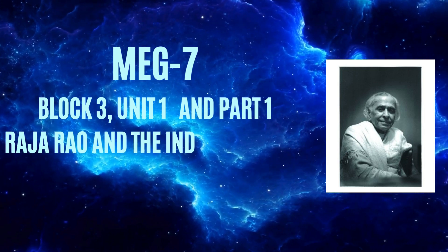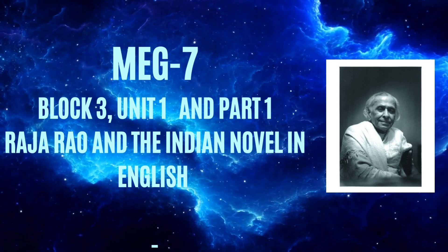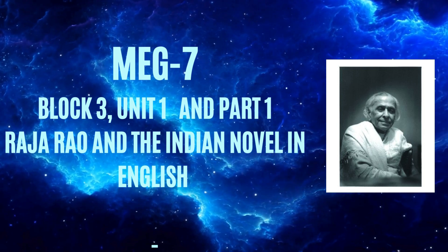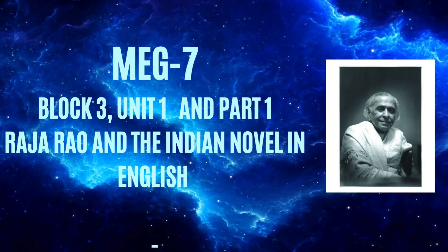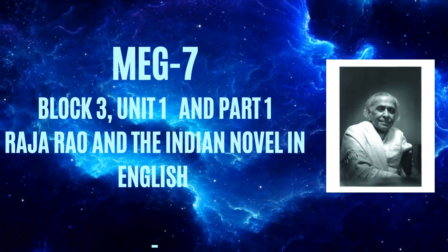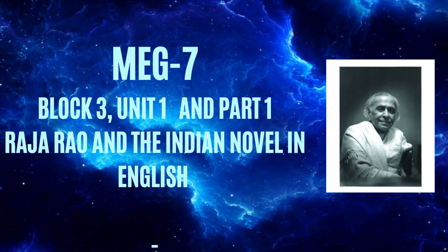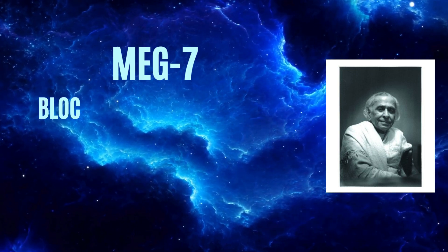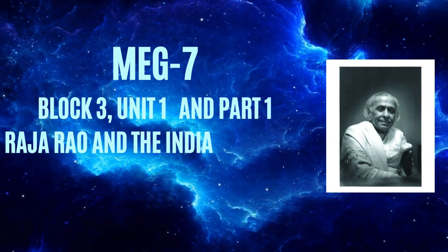It was the British who introduced the Indians to the novel as a form of literature. The Indian novel in English emerged in the 1920s and established itself as a popular form in the next 30 years. Social realism and reform movement generated by liberal humanist ideals gathered momentum and assumed a national form between 1920 and 1940 under the leadership of Mahatma Gandhi. The Gandhian ideals of Satyagraha find expression in the novels of Mulk Raj Anand and Raja Rao.